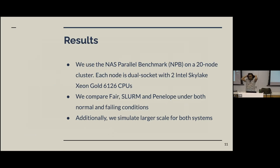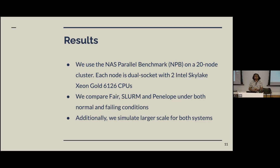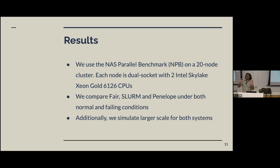To evaluate Penelope against centralized systems, we want to evaluate three things: performance under nominal conditions, behavior under faulty conditions, and behavior as scale increases. For the first two, we use a 20-node cluster, each with two CPUs, and compare three systems: Penelope, SLRM (a state-of-the-art centralized system), and FAIR — a naive static allocation where you take the system-wide power cap, divide it by n, and you're done. We use the NAS Parallel Benchmarks suite with 10 applications. The cluster is divided in half, running one application on each half to simulate different applications with different power needs, as happens in a real data center.